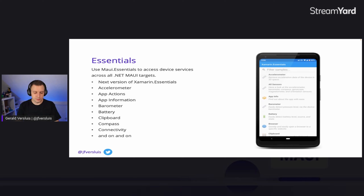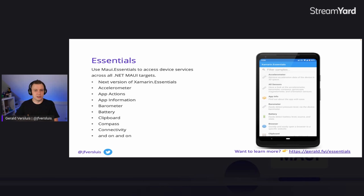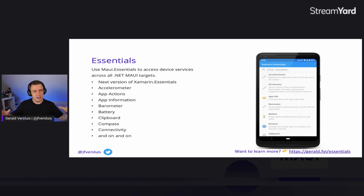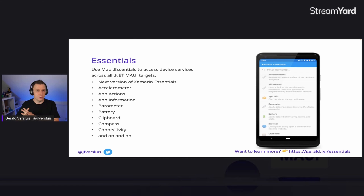We also have Essentials — or the APIs formally known as Essentials, because we changed them to be in different namespaces. We divided the Essentials libraries into their own namespaces that make more sense. For example, geolocation is now in something like Microsoft.Maui.Devices.Sensors. We put them in more logical places. This is basically all the APIs and sensors that are not necessarily a UI thing in .NET MAUI, but are still common across all the platforms.